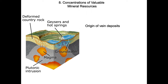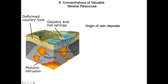Starting out with vein deposits, we have deformed country rock, geysers and hot springs, and a plutonic intrusion. What's happening is we have a sedimentary sequence with groundwater being heated up by a plutonic intrusion. Magma works its way towards the surface because it's less dense than the surrounding material — trying to float up like an ice cube. As it gets closer to the surface, it heats up the groundwater, causing it to convect. It rises and reaches the surface as a geyser or hot spring, cooling off and dropping the ions it scooped up in very hot water. If those are ions of interest — like silver and gold — it becomes an ore deposit if it's valuable enough.